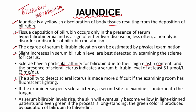The ability to detect scleral icterus is made more difficult if the examining room has fluorescent lighting — it must be done in natural daylight. If the examiner suspects scleral icterus, a second site to examine is underneath the tongue, to confirm scleral findings. Sometimes normal individuals may also have yellowish discoloration of the sclerae due to dust or other causes, so to reinforce the finding we look at the base of the tongue.